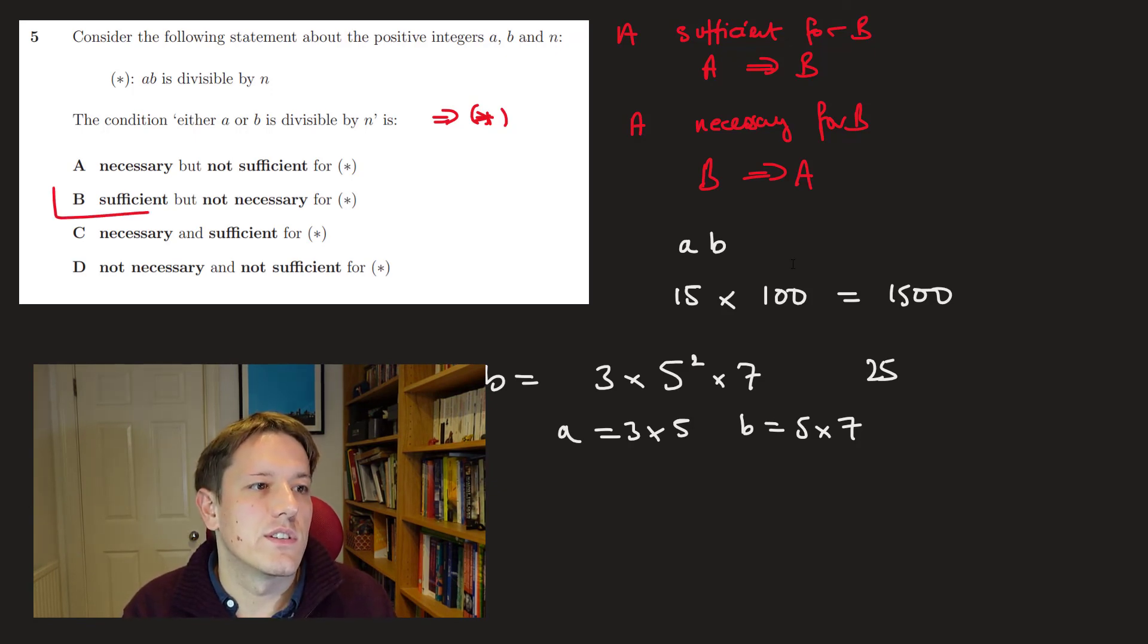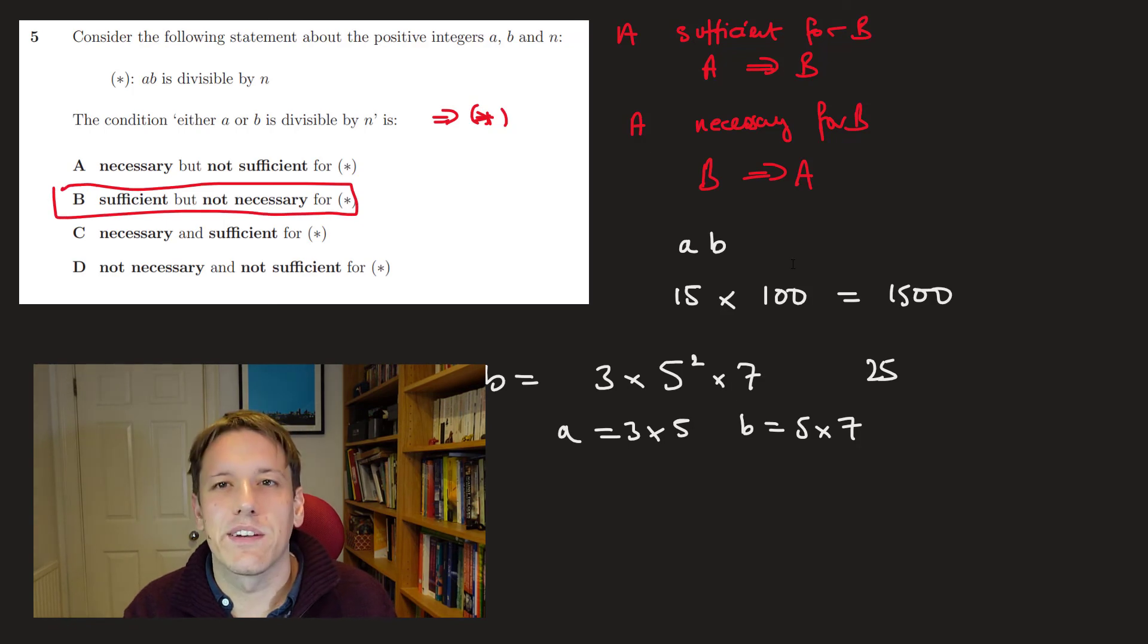By the way, there are simpler examples, smaller numbers here that you could choose to show this fact that it's not necessary here. But that is all we need. So I hope that was useful. Please do like the video and subscribe to the channel if you haven't already, and click the bell notifications if you want to get notifications for when I put the rest of these videos out. I'm trying to finish the TMUA 2019 in time for the 2020 paper, but there'll be lots more content coming in the future as well.